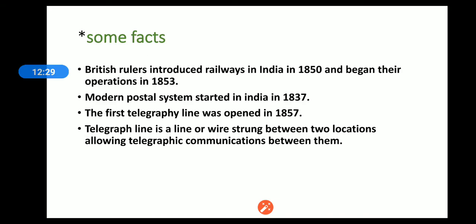The modern postal system started in India in 1837. The first telegraphy line was opened in 1857. The telegram, which was used as a text message, was transmitted by wire to allow communication between two locations.